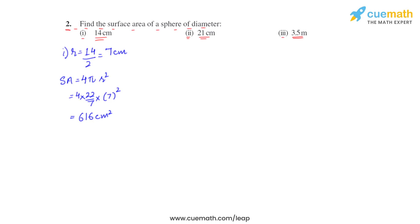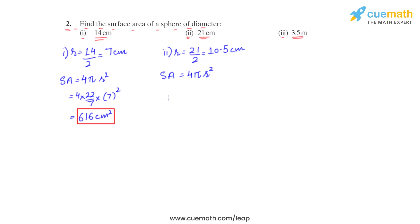So the surface area of this sphere is 616 square centimeters. For the second part, we follow the same steps. The radius will be 21 by 2, which is 10.5 centimeters. The surface area will be 4 pi r squared, that is 4 into 22 by 7 into 10.5 squared.